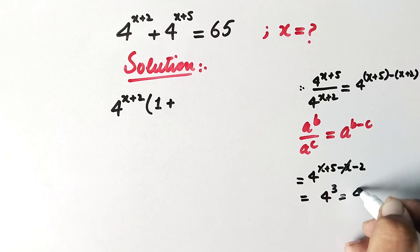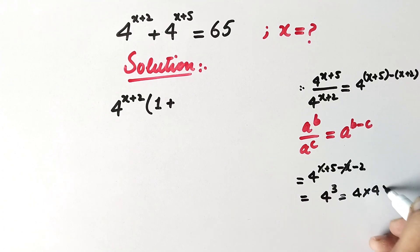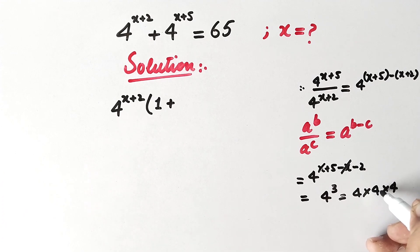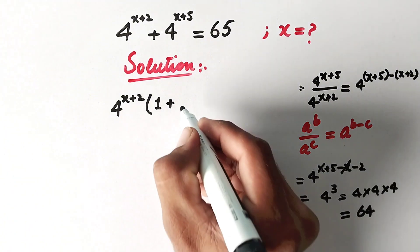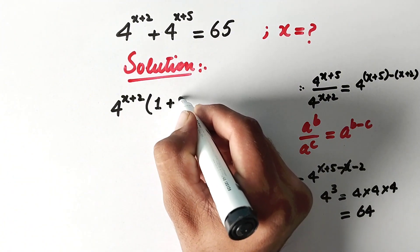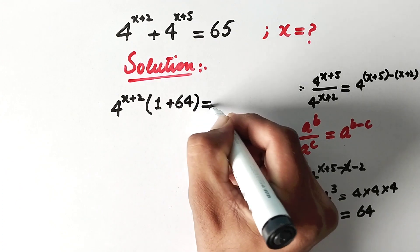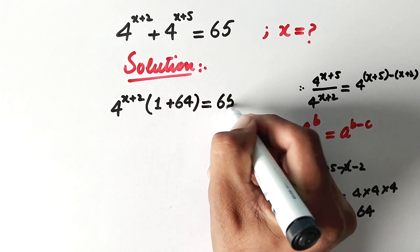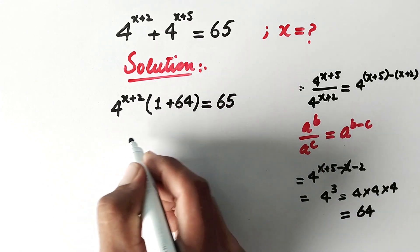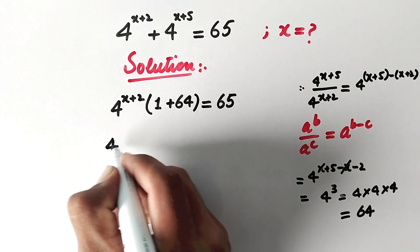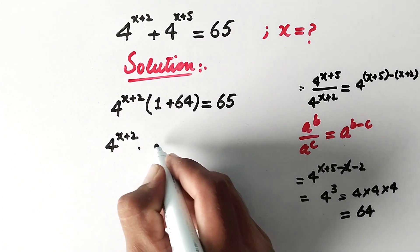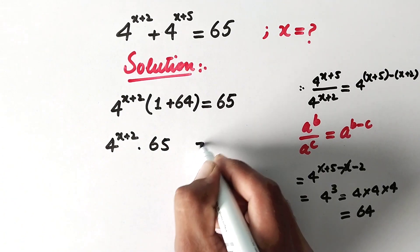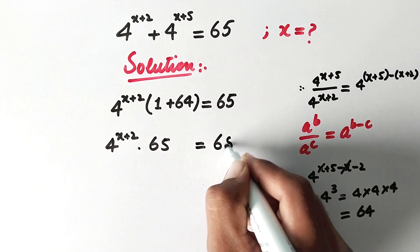So we can write 4 multiplied by 4 multiplied by 4: 4 times 4 is 16, and 16 times 4 is 64. Therefore it will be 1 plus 64 equal to 65. In the next step we can write 4 to power x plus 2, times (1 plus 64) equals 65.